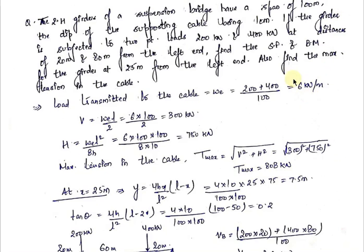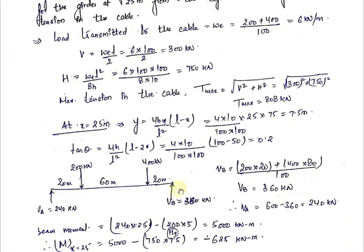Now we have to find out the values of shear force and bending moment at 25 meters from the left end. The bending moment formula for a 2-hinged stiffening girder is: BM = beam moment − H × Y. So first we need to find out the beam moment, and then find the values of H and Y for x = 25 meters.